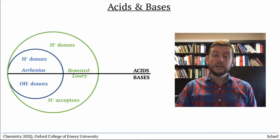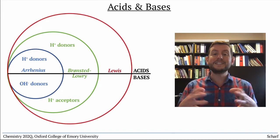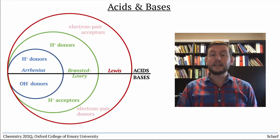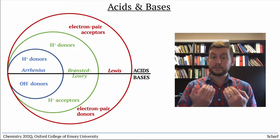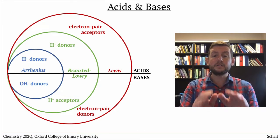The broadest definition, which encompasses the Arrhenius and Bronsted-Lowry definitions, is the Lewis definition, which focuses on electrons rather than protons. Lewis acids are electron pair acceptors, while Lewis bases are electron pair donors.